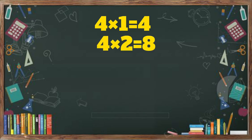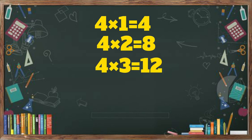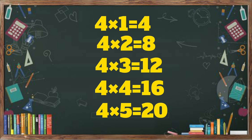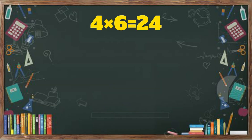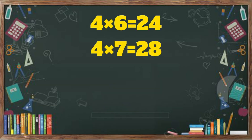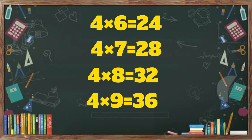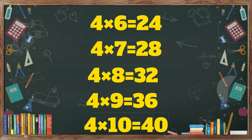Four ones are four. Four twos are eight. Four threes are twelve. Four fours are 16. 4 5s are 20. 4 6s are 24. 4 7s are 28. 4 8s are 32. 4 9s are 36. 4 10s are 40.